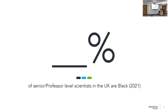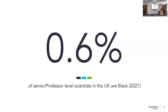Last question: what is the percentage of senior professor-level scientists in the UK who are Black? Audience guesses of 8% were met with 'lower, lower, lower.' The answer is 0.6%.